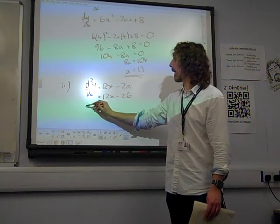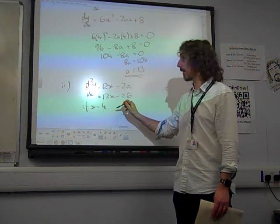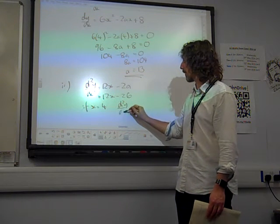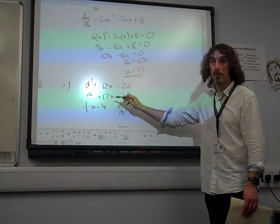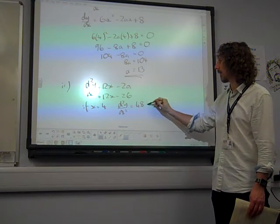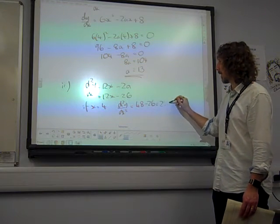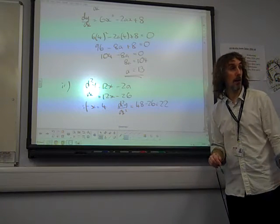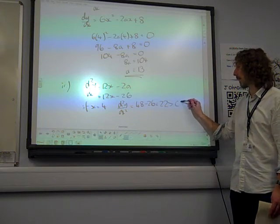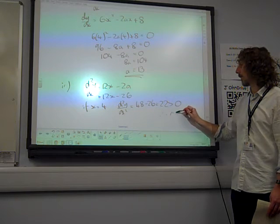So if x equals 4, which is what happens at B, we've got 12 times 4, so 48, take away 26, is 22. And the thing that matters is that that is bigger than 0, therefore we've got a minimum.